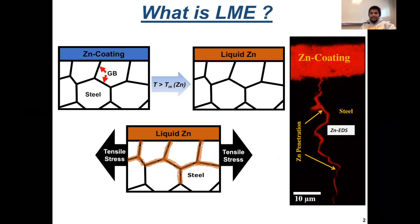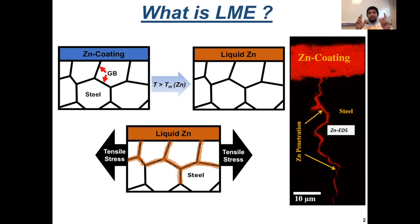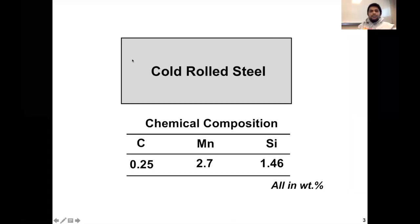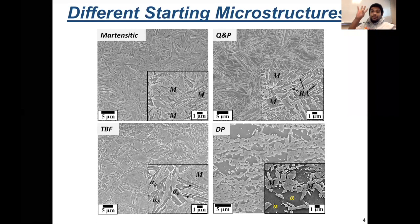We suspected that both the microstructure and the chemical composition can independently influence LME susceptibility. In this presentation, I will show you how we established that the microstructure of an AHSS can independently influence LME susceptibility. We used a cold roll steel having a fixed chemical composition, and we performed continuous annealing using four different thermal cycles to generate four different starting microstructures.